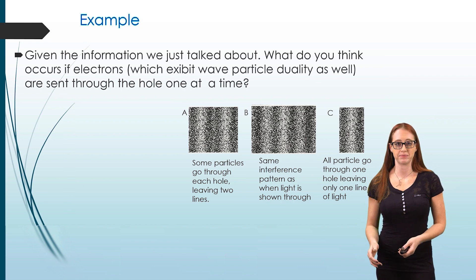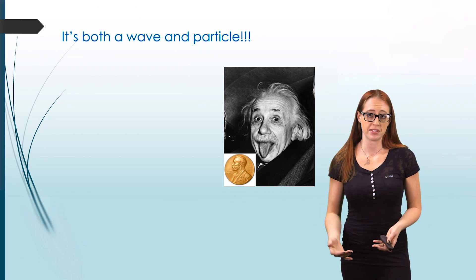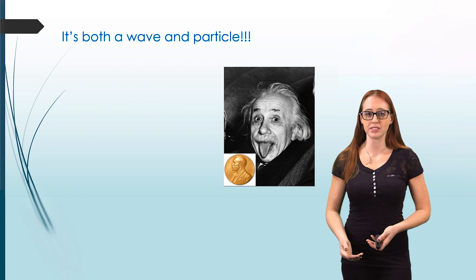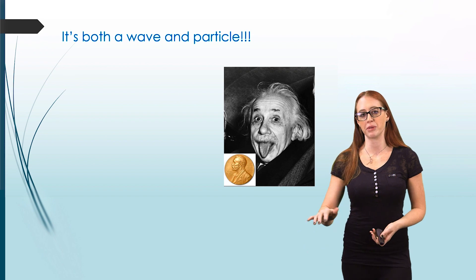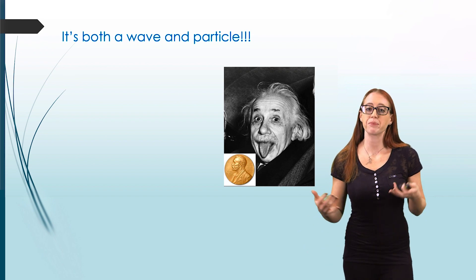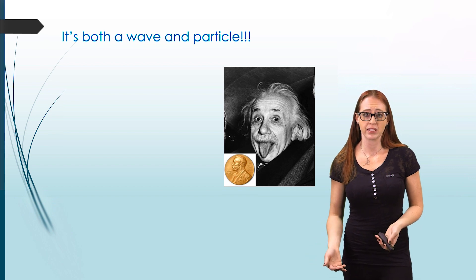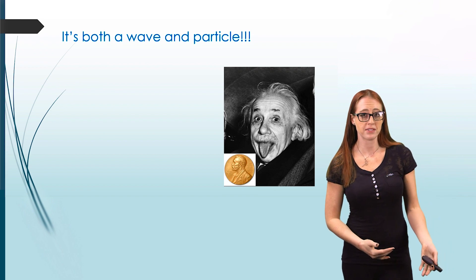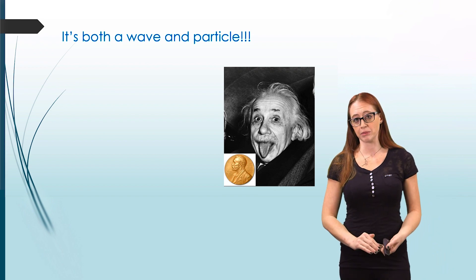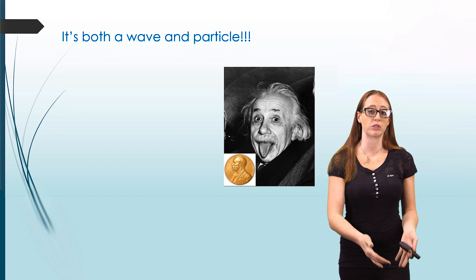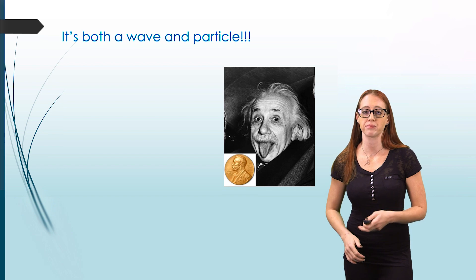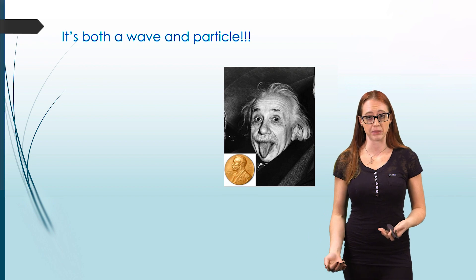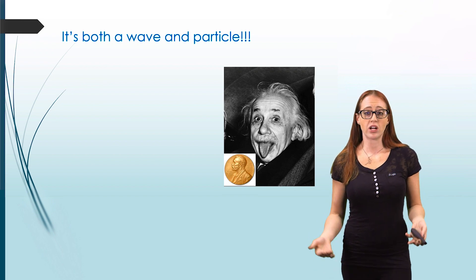What Young's initial experiment doesn't show us is the idea that light also has particle-like properties. There have since been expansions on Young's experiment that do show us the particle-like properties, but we won't go into that too much. Because of the structure of Einstein's experiment, we are able to see these properties, whereas Young's experiment was only testing for wave-like properties. Einstein devised an experiment that showed light has both wave and particle-like properties — this was called wave-particle duality.